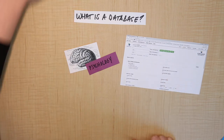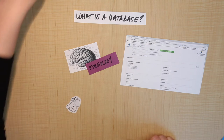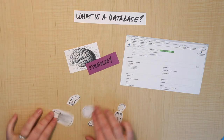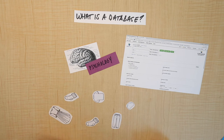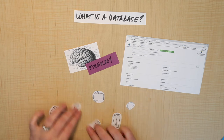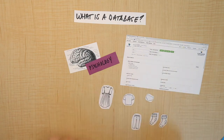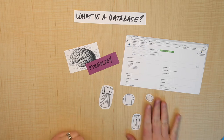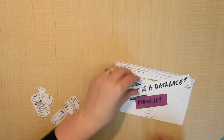We talked about how in a database, instead of having all your stuff kind of randomly strewn everywhere like in Google, it gets nicely organized and it's neat and it's easy to search. Databases are accessed through the library website.